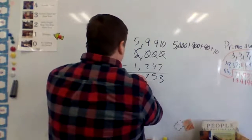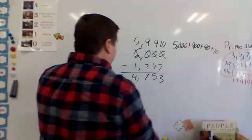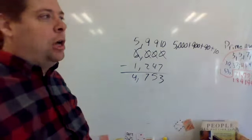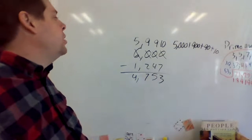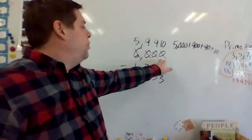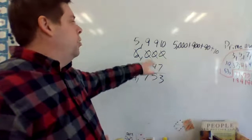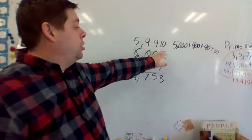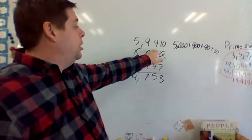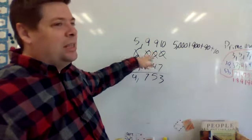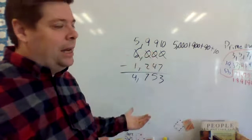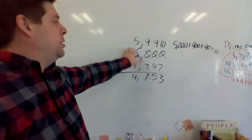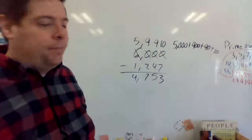This reorganization helps me avoid having to go back and borrow repeatedly. So: 10 minus 7 equals 3, 9 minus 4 equals 5, 9 minus 2 equals 7, and 5 minus 1 equals 4. That's subtracting across zeros — you turn the ones place into 10, the next places into 9s, and borrow from the leading digit.